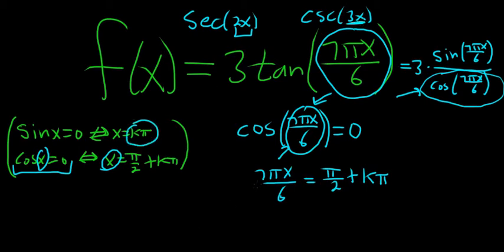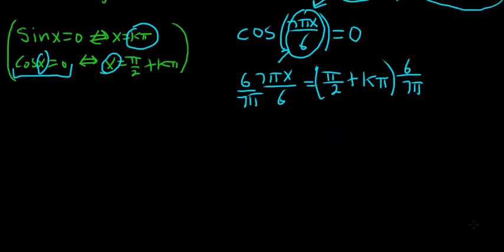To finish this problem, we have to solve for x. The easy way to get rid of the 7 pi over 6 is to multiply by the reciprocal. So multiply by 6 over 7 pi. Let's do it to both sides. I'm going to show all the steps.